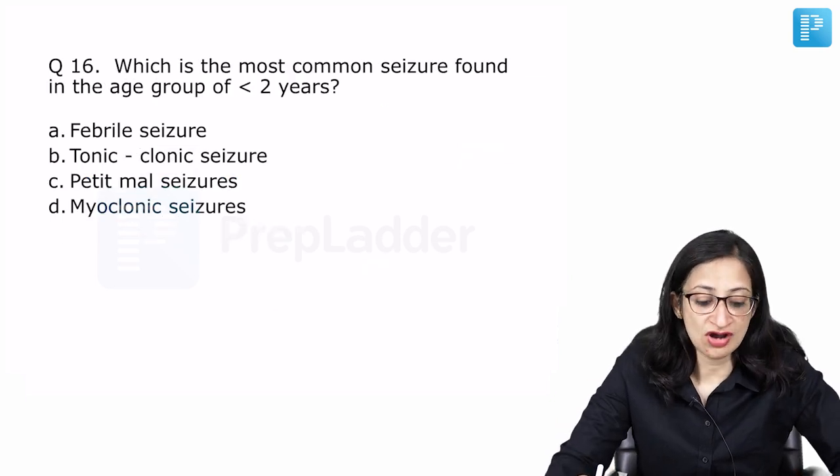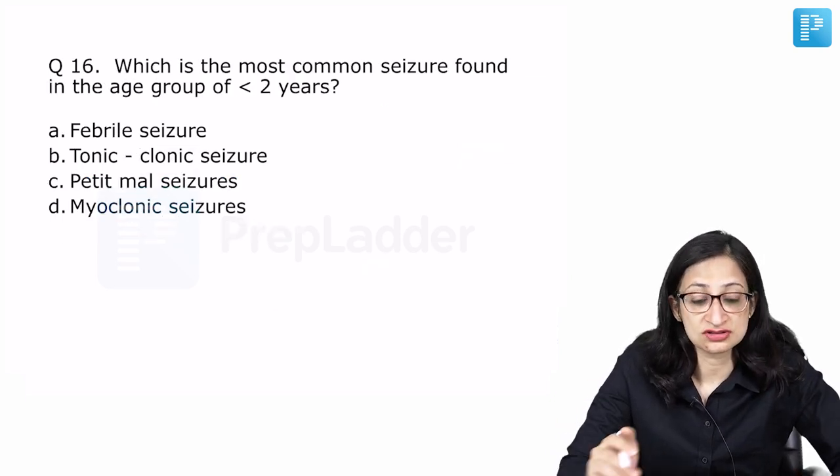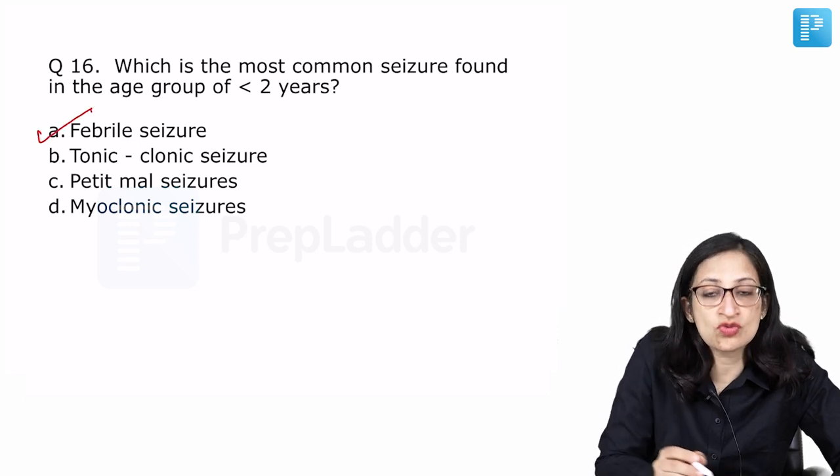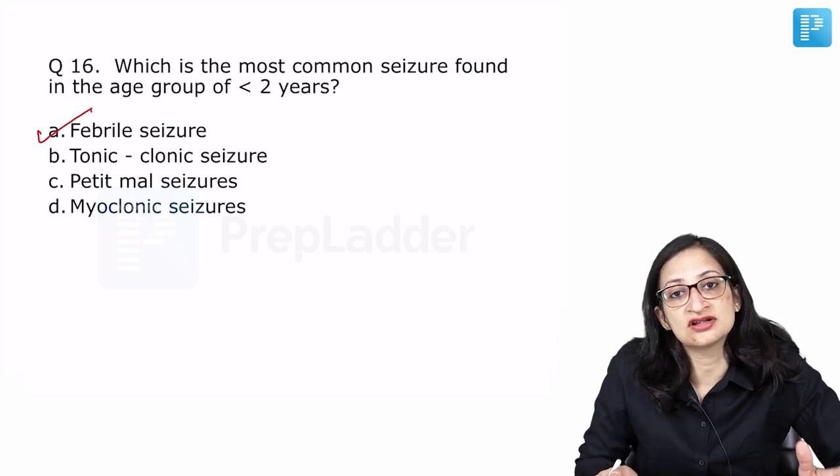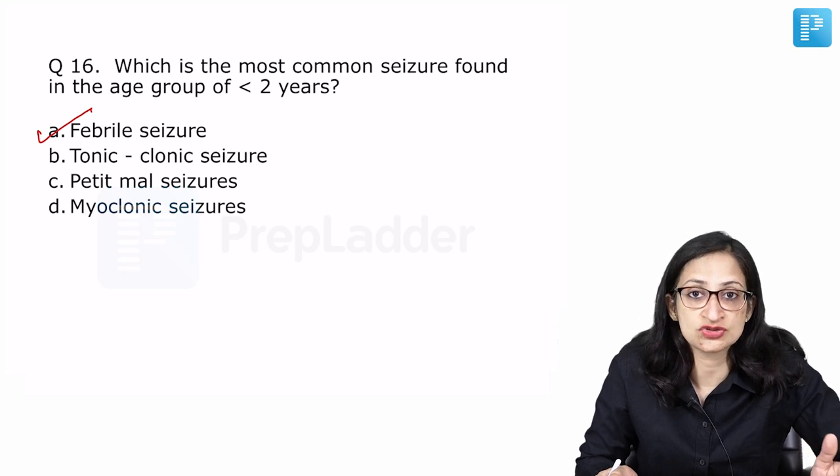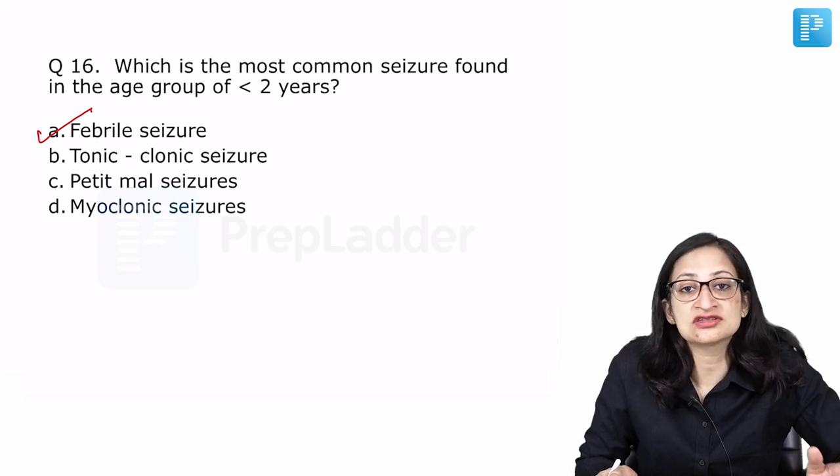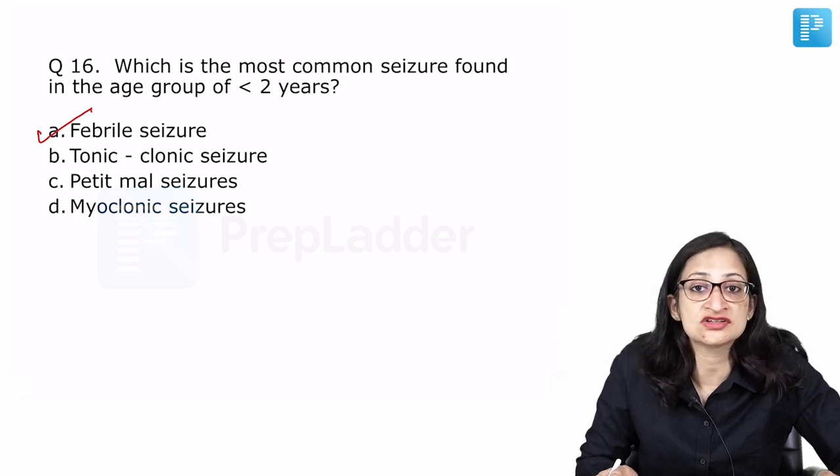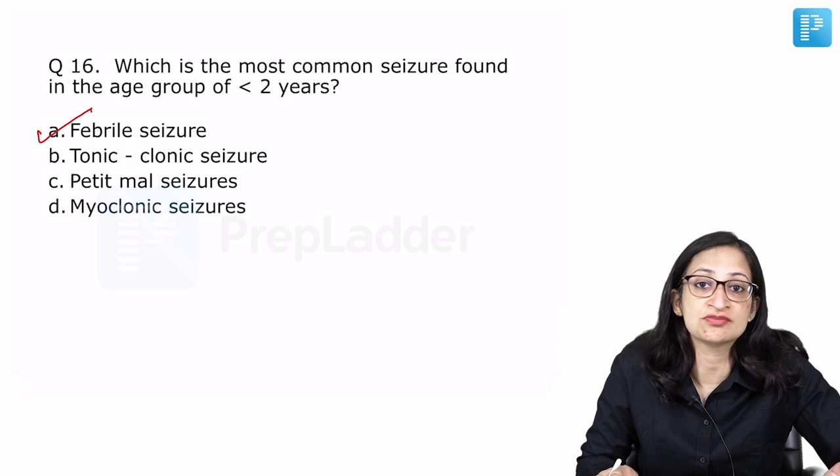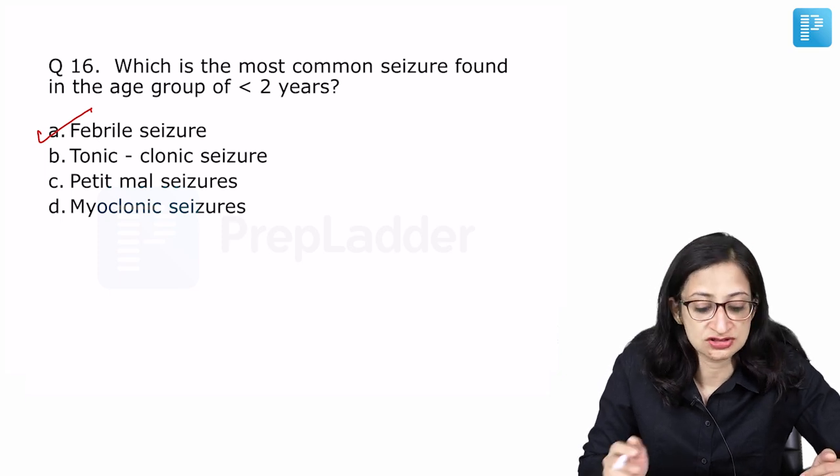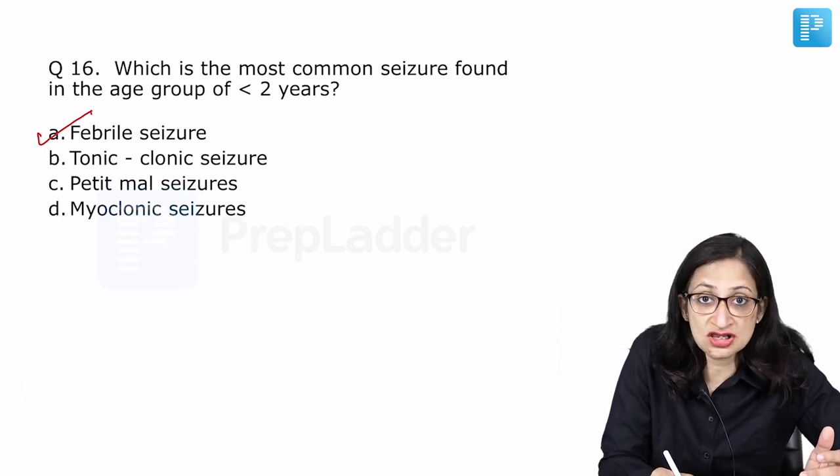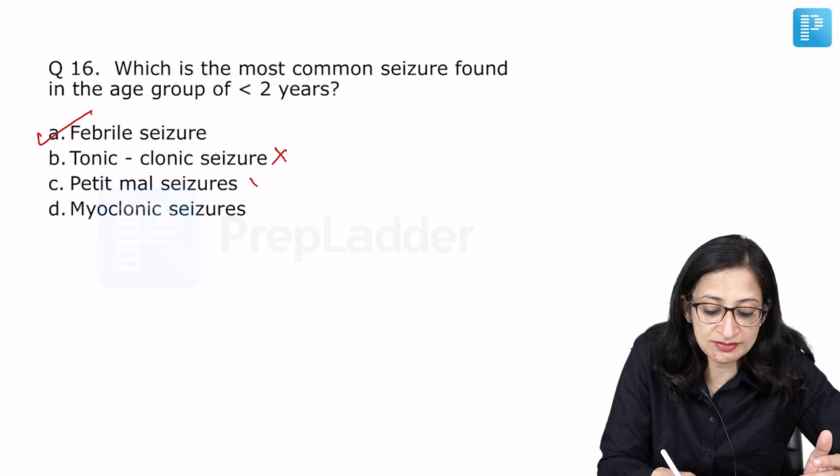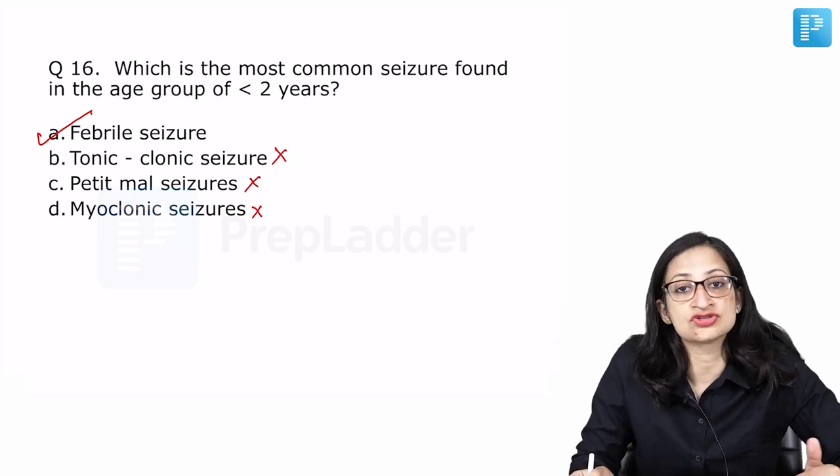Which is the most common seizure found in the age group of less than 2 years? Febrile seizures we know is the most common seizure in children less than 5 years also, in children less than 2 years also. Any child between 6 months to 5 years of age is having seizures along with significant fever without any evidence of CNS infection, we call it febrile seizures which can be simple or complex febrile seizures. Tonic clonic seizures are not the most common type. Petit mal or absence seizures, again, no. Myoclonic seizures, no.